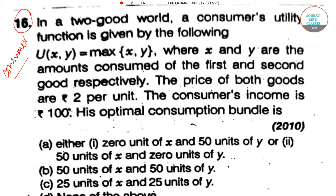We are saying that in a two-good world, the consumer's utility function is given by U = max(x, y), where x and y are the amounts consumed. So x is the quantity of the first good and y is the quantity of the other good.